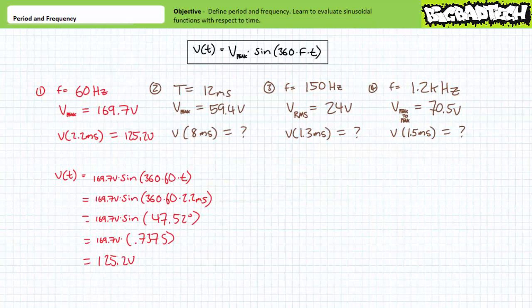For Example 1, given a peak value of 169.7 V and frequency of 60 Hz, the time-variant sine function is V(t) = 169.7 V × sin(360 × 60 × t). Substituting 2.2 milliseconds, the expression in parentheses yields an angle of approximately 47.5 degrees. Sine of 47.5° is approximately 0.7375, and multiplying by the peak value of 169.7 volts yields approximately 125.2 volts.